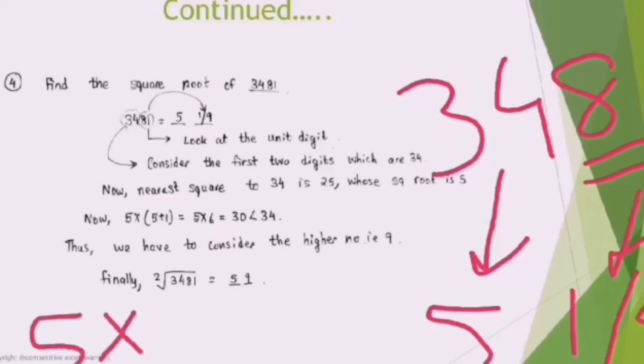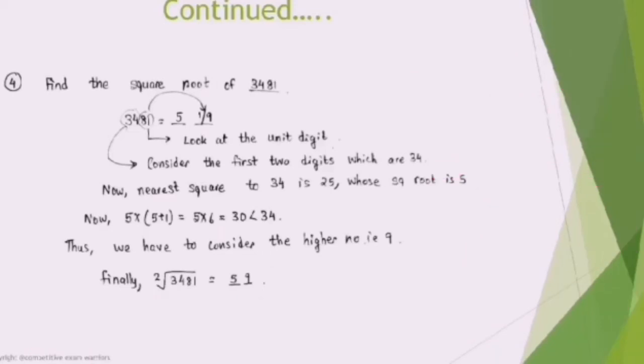If we multiply 5 with the next number 6, it comes out to be 30, and 30 is less than 34. So we need to take the higher number according to convention. This time the answer will be 59 and not 51. The square root of 3481 is 59.